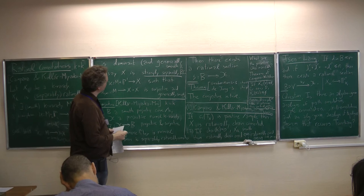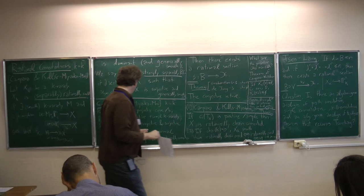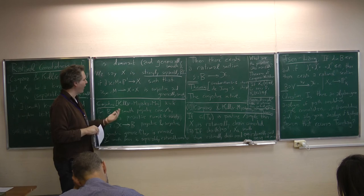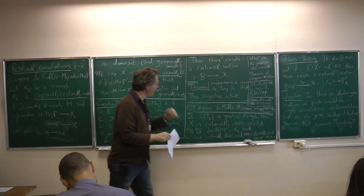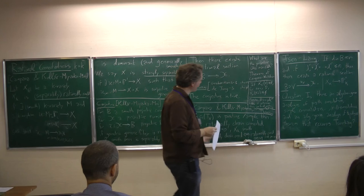Following that idea as far as it goes, we get a theorem: if C_1 of the tangent bundle is ample — or over the complex numbers, positive in the sense of having a metric of positive curvature — then X is rationally chain connected. That's slightly weaker than rationally connected in general: it means every pair of points is connected by a chain of rational curves rather than necessarily a single rational curve. But in characteristic zero, if X is smooth, then rationally chain connected is the same as rationally connected.